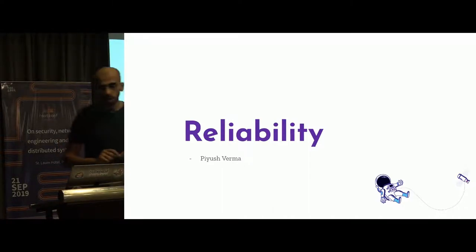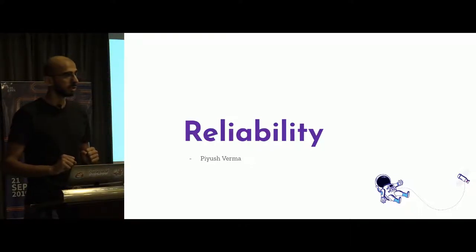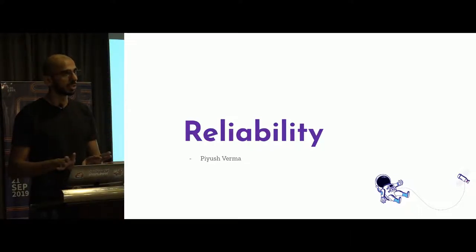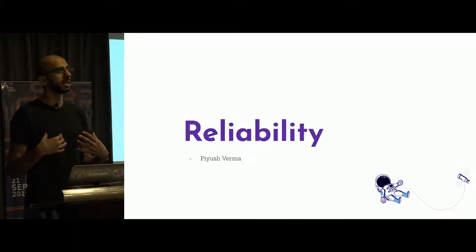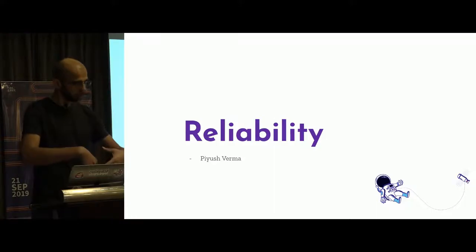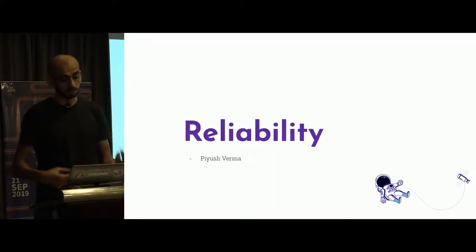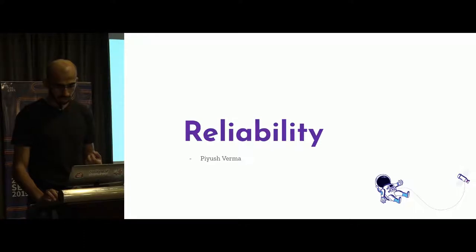First question first: how is reliability different from DevOps? One is an ability of a system, the other is an action. My ability to eat doesn't mean I am going to eat. How does the system become reliable is what I am going to talk about.